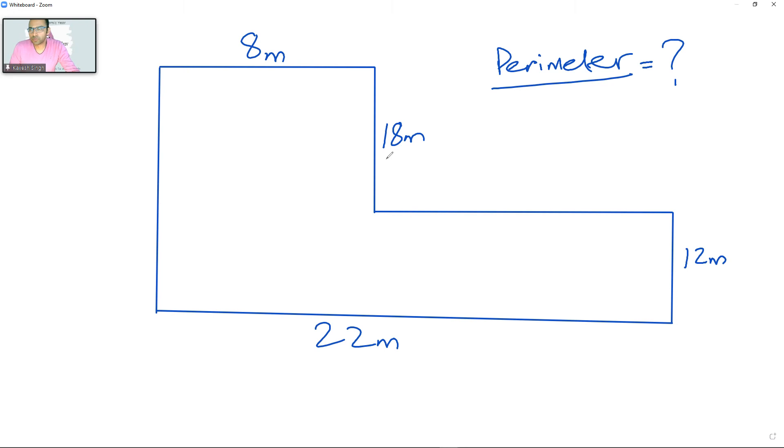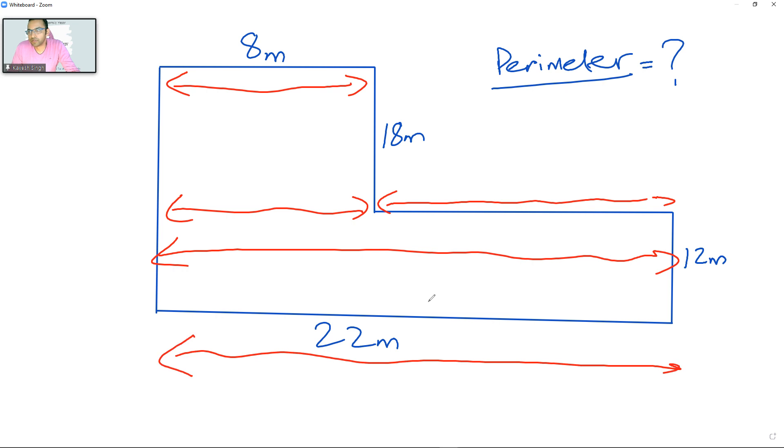The first thing we've got here is this side is 18 meters and this is 8 meters. Now, what will this length be over here if that length over there is the same as that length, and the whole thing is the same as this whole thing over here?